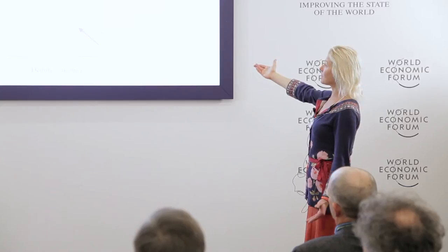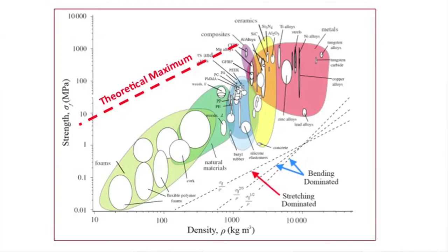Going back to the property space of strength versus density, we know there is a certain space we're trying to hit. There is a theoretical maximum that is good enough to propel us into a world where we can design materials that are really lightweight and at the same time very strong. That white space is what we're shooting for.